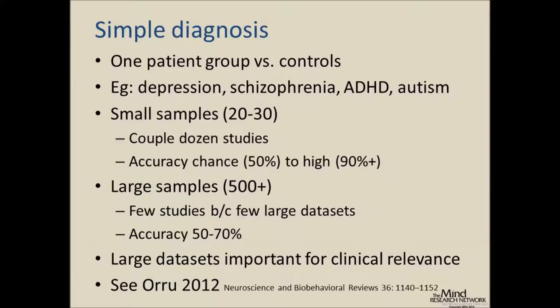Our group works on Alzheimer's, schizophrenia, depression, autism, and ADHD, using structural MRI and DTI. As of last year, we had the best results published on two large datasets. We're also starting work on neurocysticercosis — a disease endemic in the developing world where people get brain parasites through contaminated water.